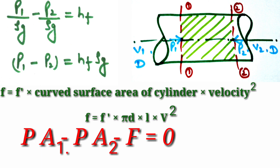The cross-sectional area of the pipe is π/4·D². Applying Newton's second law for equilibrium, the net force equals zero: P1·A − P2·A − F = 0. The friction force acts in the opposite direction, which is why it has a minus sign. Rearranging gives P1 − P2 = F/A.